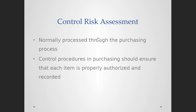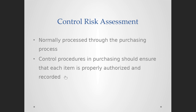The control risk is dependent upon the client's handling of the prepaid. This is normally processed through the purchasing process — when auditing the purchasing process, the client has paid for goods and services using it. There is a purchase order, there is payment — all of those you have already audited. The control procedures in the purchasing process should also ensure each item is properly authorized and recorded. What you do here is just check the balance to make sure it's right. If the client paid 12 months of rent in advance at the beginning of July, at the end of December only six months should remain in prepaid expense. If that is the case, the amount is correct and you move on.